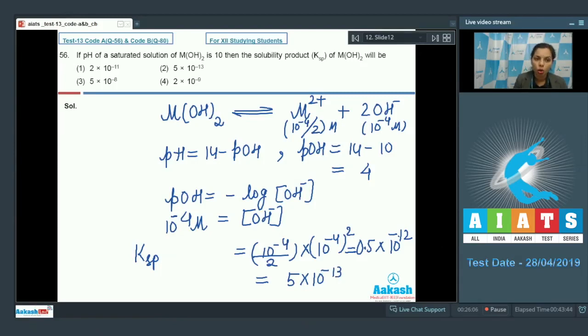Here, it is 1 by 2. So, 0.5 it can be written or it can be written as 5 into 10 raised to the power minus 13. And, on that basis, the correct answer would become option 2 that you should choose as your correct answer.